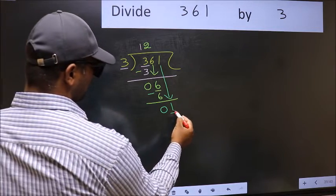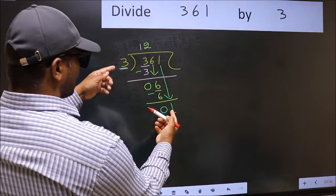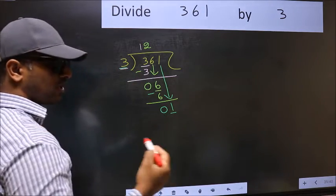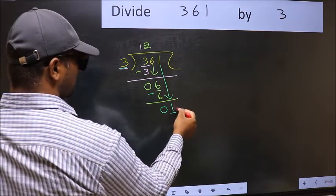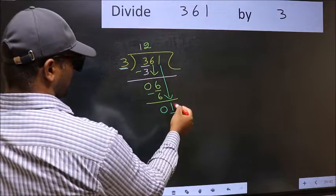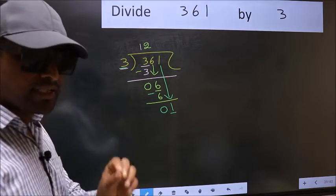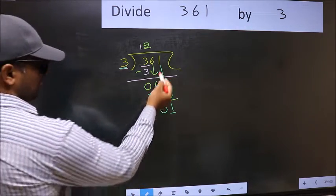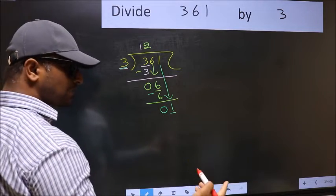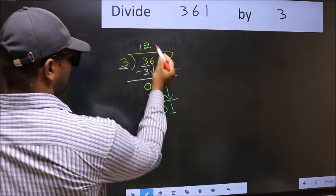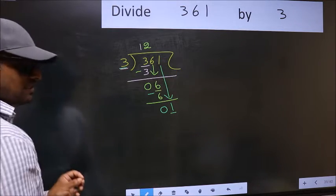Here we have 1, and here 3. 1 is smaller than 3. So what many do is they directly put a dot and take 0, which is wrong. Why is it wrong? Because just now you brought this number down, and in the same step, you want to put a dot and take 0, which is wrong.